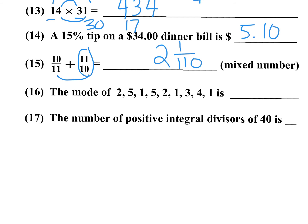Number 16: What is the mode for 2, 5, 1, 5, 2, 1, 3, 4, 1? I see three ones, two fives, two twos. The mode is the value that appears most — 1 appears three times, so the answer is 1.